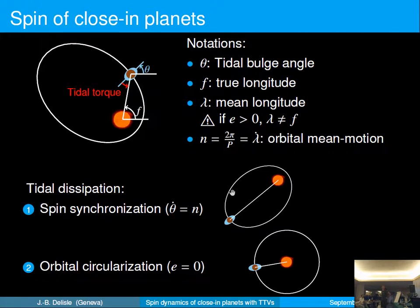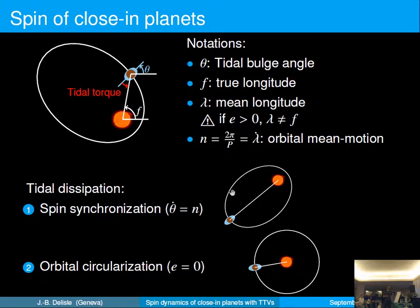We study the spin dynamics of close-in planets, such as planets with orbital periods typically smaller than 20 days. For those very close-in planets, we expect the tidal dissipation to be very strong. It is usually assumed that those planets synchronize and circularize, ending with a planet that is always showing the same face to the star on a circular orbit.